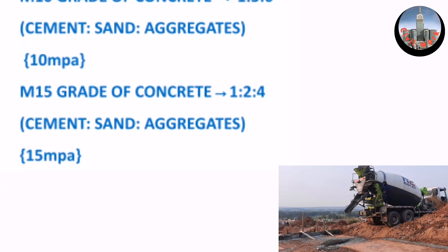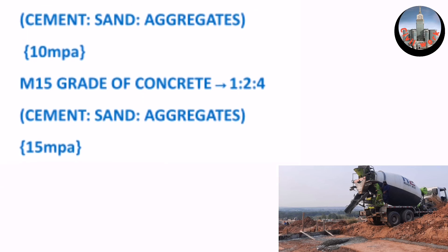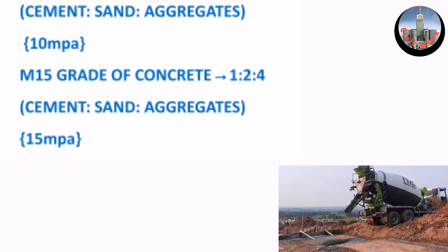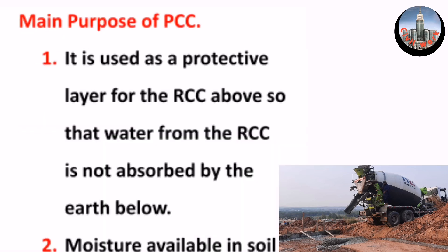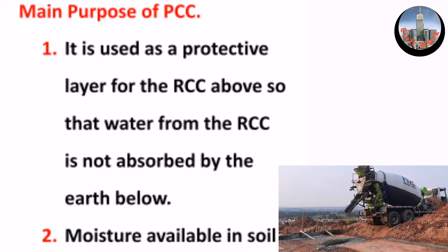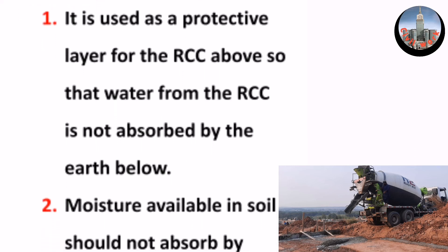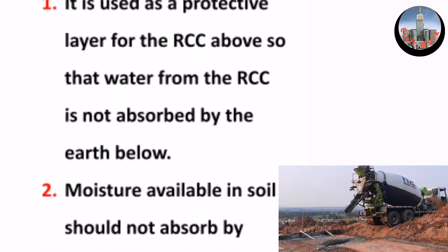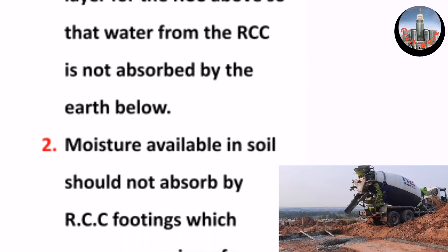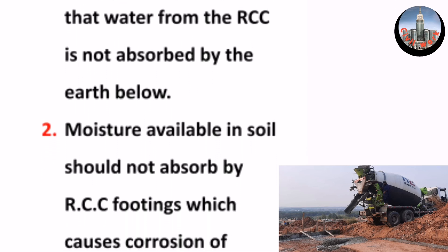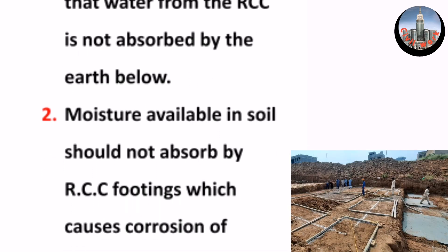M15 grade of concrete has a mix ratio of 1:2:4 — one part cement, two parts sand, four parts aggregate — giving 15 MPa. The main purposes of PCC: first, it is used as a protective layer for the RCC above, so that water from the RCC is not absorbed by the earth below.